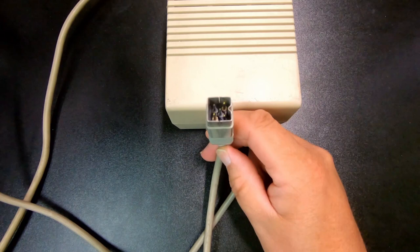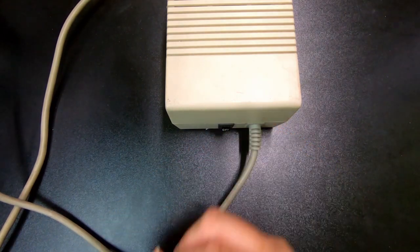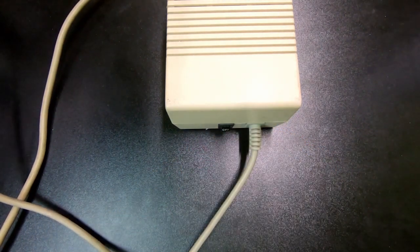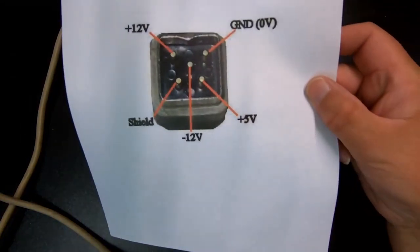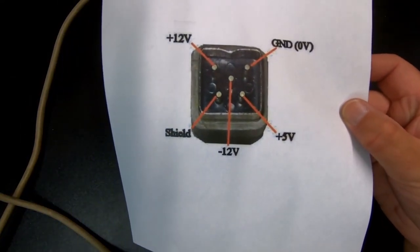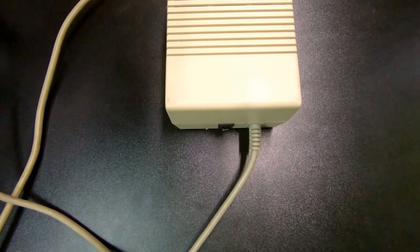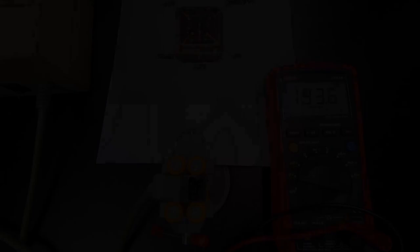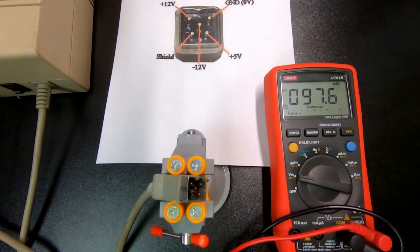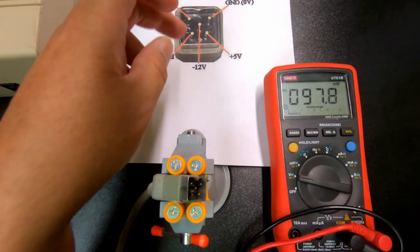And then the next thing is to measure the voltages. Here you have a little bit of a guideline for the pin setup. So I'm going to set up now so we can measure those voltages. Now we're ready to measure, and basically we can see that we have a ground, plus 5 volts, 12 volts, and minus 12 volts and plus 12.